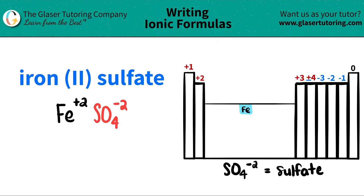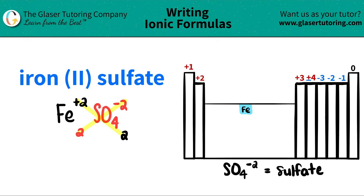Now we're ready to crisscross the charges — it's a little trick that we do. We take the charges and crisscross them to show how many of each component we need. So this plus two crisscrosses down telling me that I need two sulfates, and then this negative two crisscrosses down telling me that I need two irons. When you do this crisscross, don't worry about the positives and the negatives — you can scribble those out.